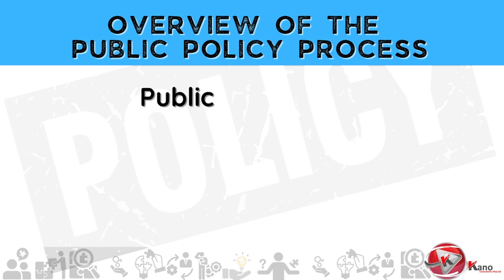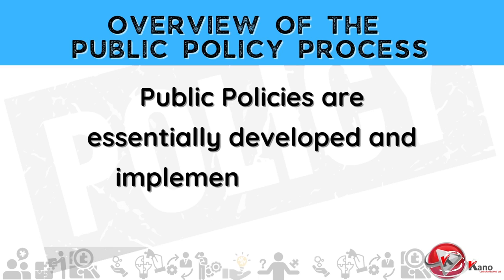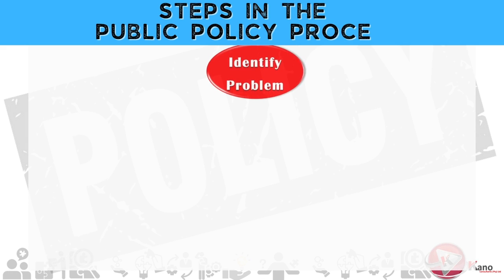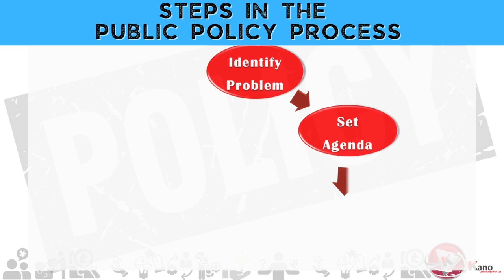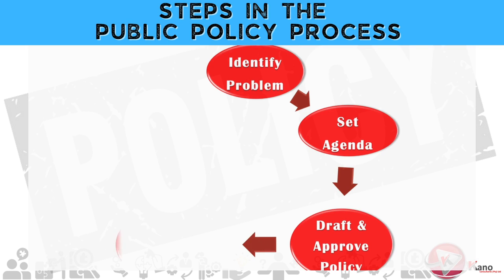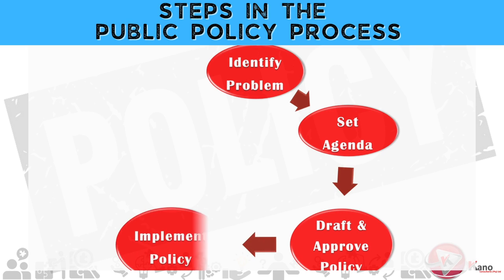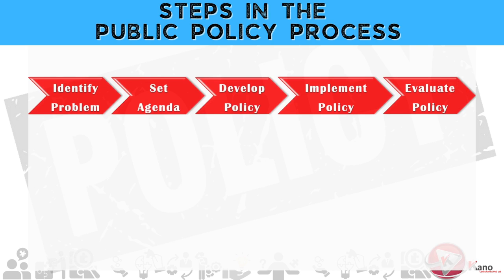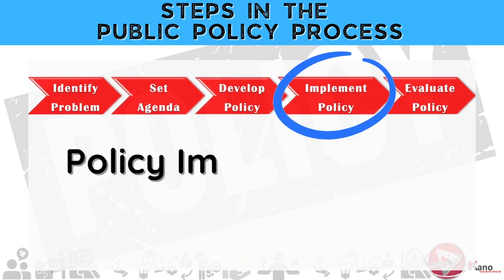Public policies are essentially developed and implemented to meet certain goals. There are various steps in the public policy process which involve identifying the problem, setting the agenda, developing and formulating the actual policy, implementing the policy, and once such public policy has been implemented, it must be monitored and evaluated. In this particular video, we will focus on policy implementation.